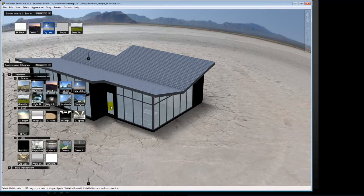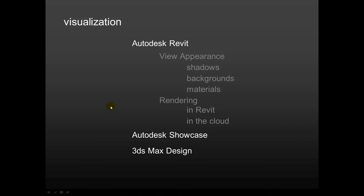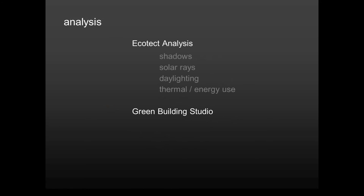Let's switch over because there's more to what we need to do than just visualization. I want to tell you about more the active computation side of what's going on. In terms of analysis, really the best tools to think about are Ecotect and Green Building Studio — two different things. Ecotect is available for you from the student community site, and Green Building Studio is an online service available for doing analysis, also available to you because you're part of the student community. So you'll have access to that too.